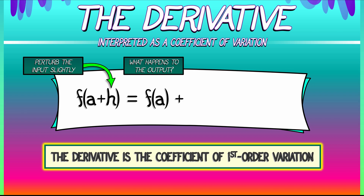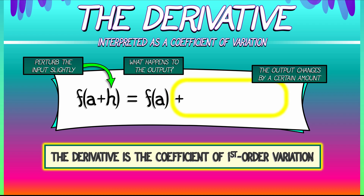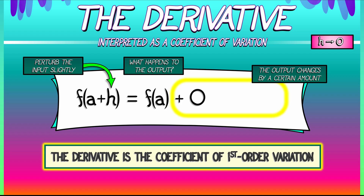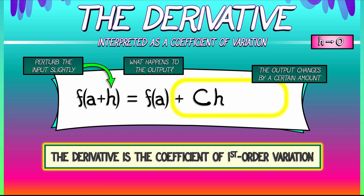Now we have some additional stuff — the output changes by a certain amount that depends on h. The question is, what are the asymptotics of this in the limit as h goes to zero? If we were to use the language of big O, we could say that all of that leftover stuff is in big O of h — that is, it goes to zero as h goes to zero. So we've got that first-order term.